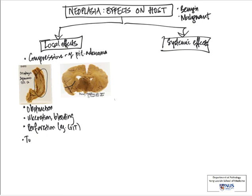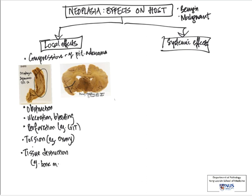Tumors can give rise to physical effects of twisting and torsion. This occurs in organs such as the ovary or the testis. When there is torsion, there is cutting off of the blood supply, and this can give rise to hemorrhagic necrosis. In addition, tumors can sometimes simply overrun and destroy the existing normal tissue — for example, bone marrow involved by leukemia, disrupting hematopoietic cells and giving rise to dysfunction.